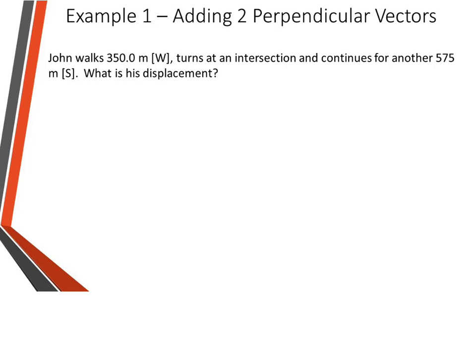It is always a good practice to sketch a vector diagram. So because we're not using the scale method, it doesn't have to be to scale — you don't even have to use a ruler if you don't want to. If you like to be neat, then you can feel free to use a ruler. So there's our 350 meters to the west, and then 575 meters south.